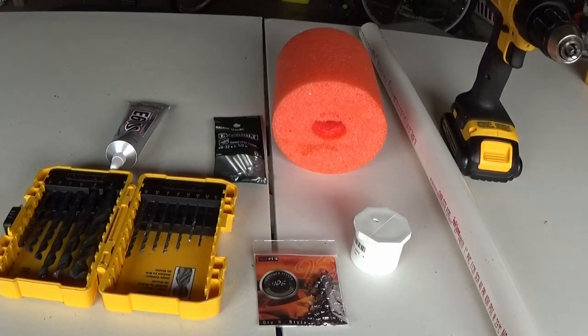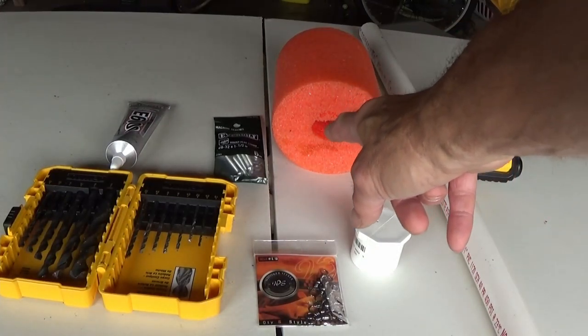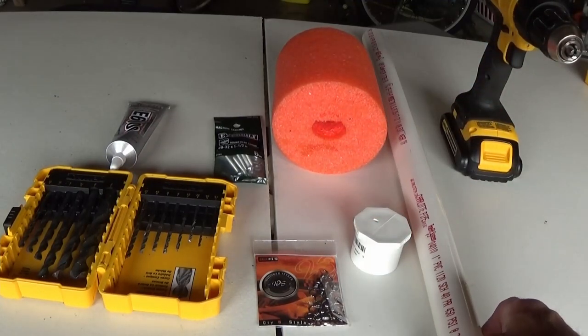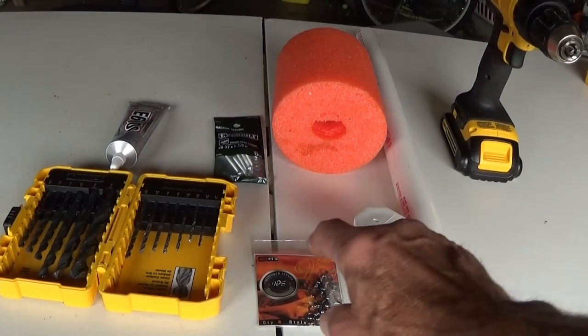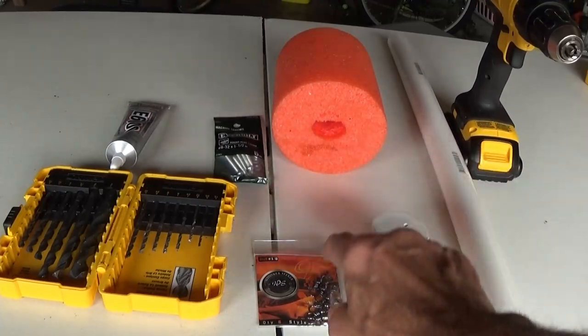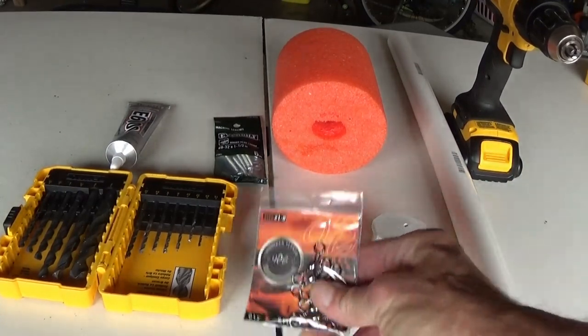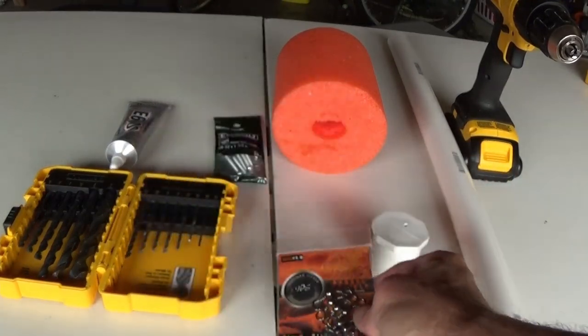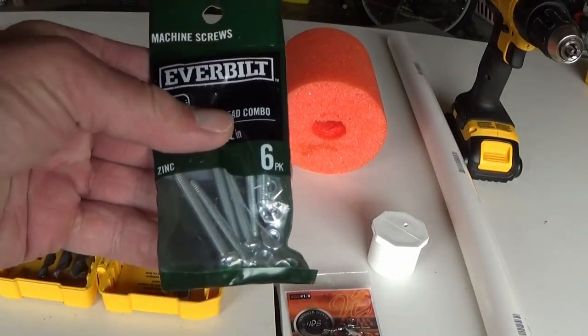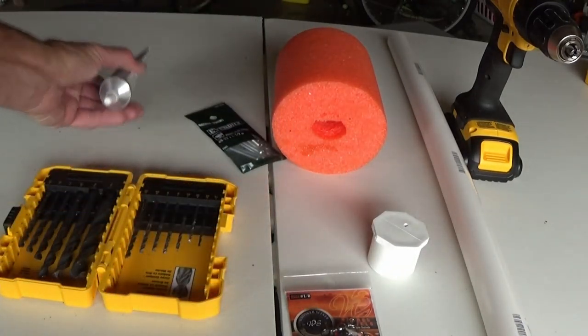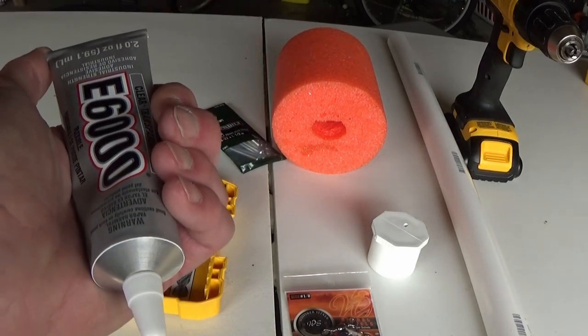I'm going to make a catfish float out of a pool noodle, PVC pipe, end cap, some swivels. I've got some bolts to hold the swivels and a little bit of E6000.